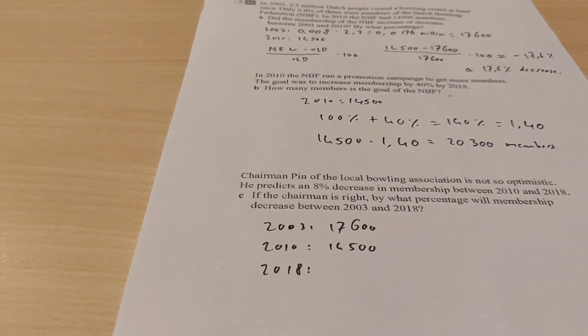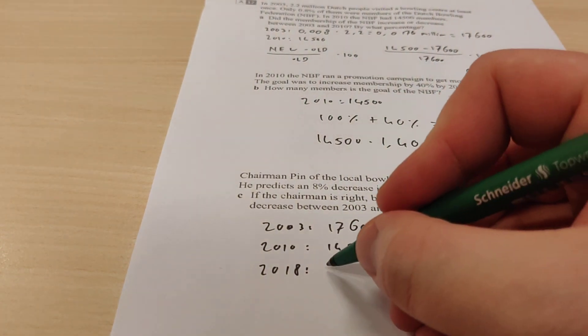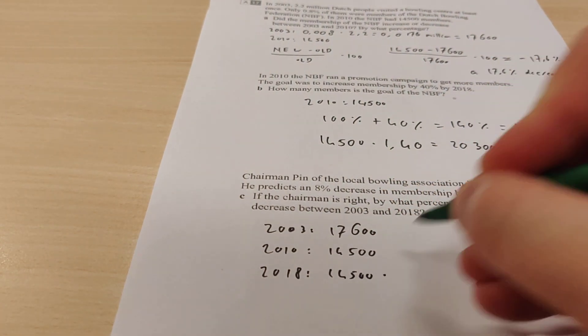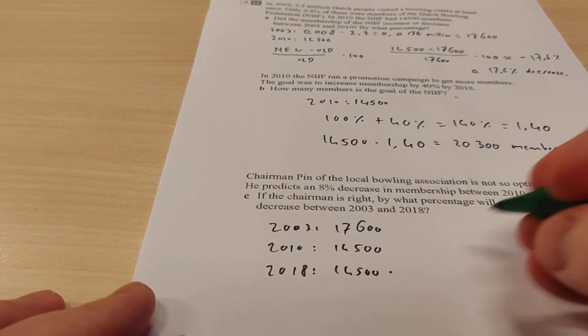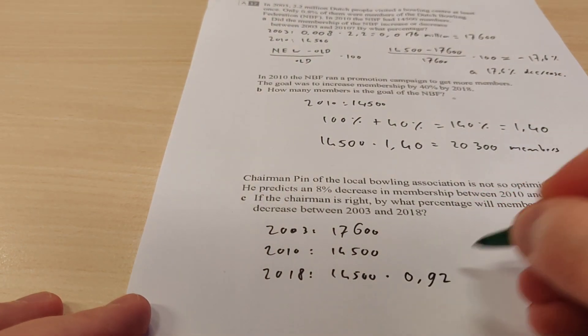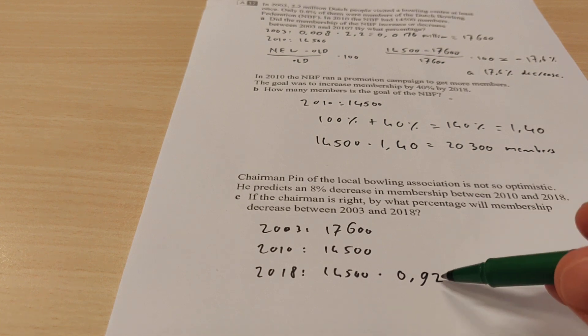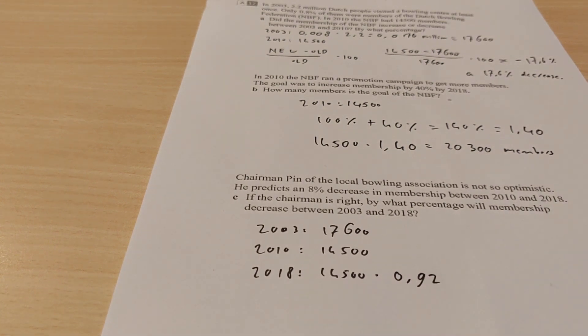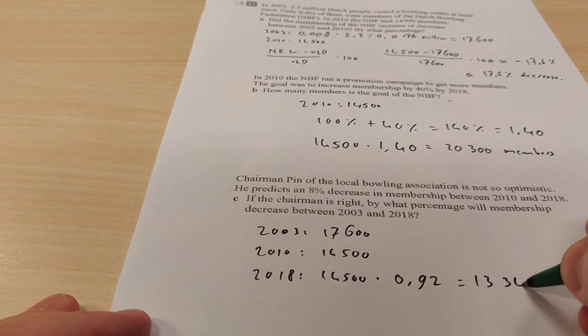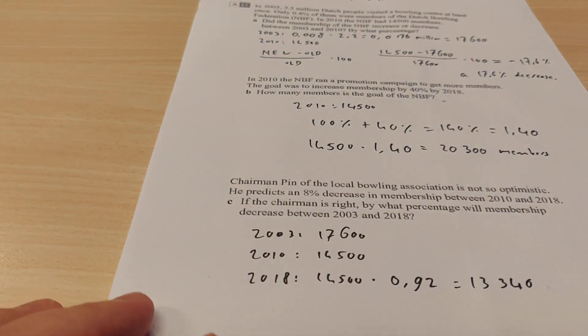But it says there might be an 8% decrease compared to this number. So you have to take this number. And then if there's an 8% decrease, you have to multiply this with 0.92. Because 100% minus 8% is 92%. And then you move the 0.2 places. So let me calculate what this is. Times 0.92. And then we have 13,340.